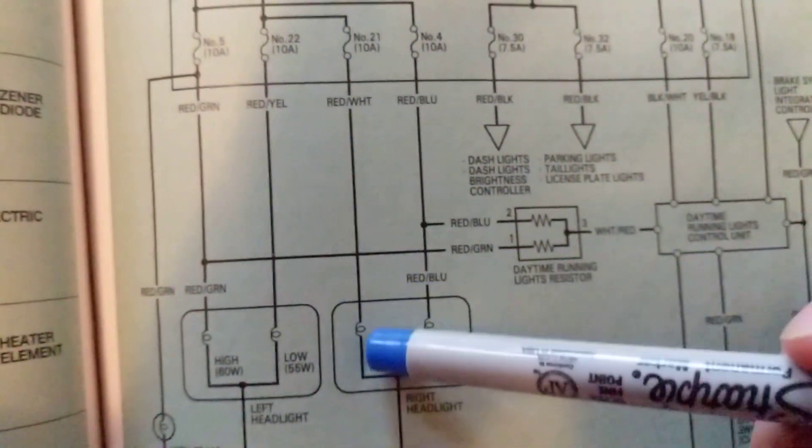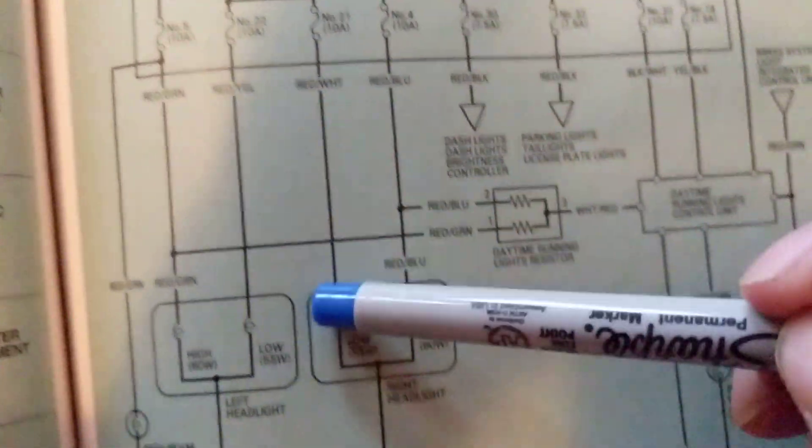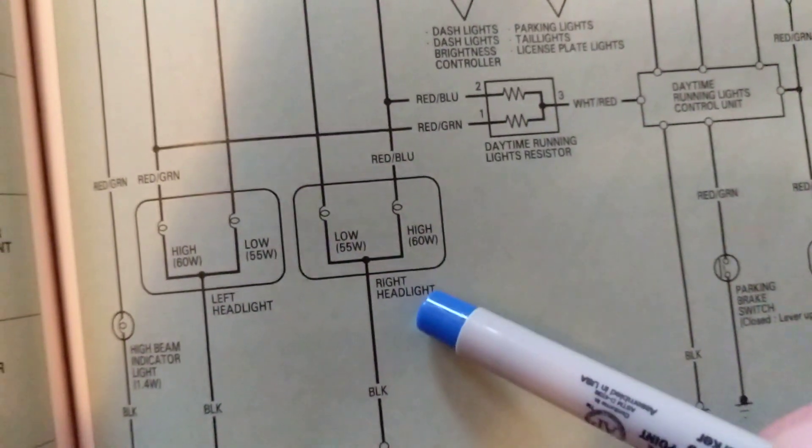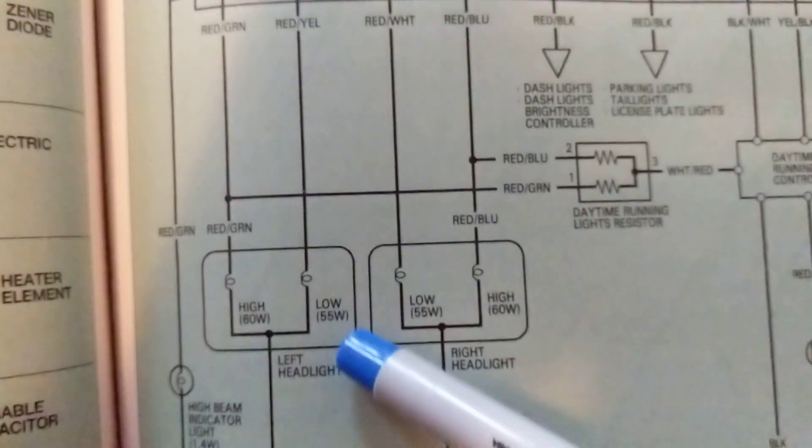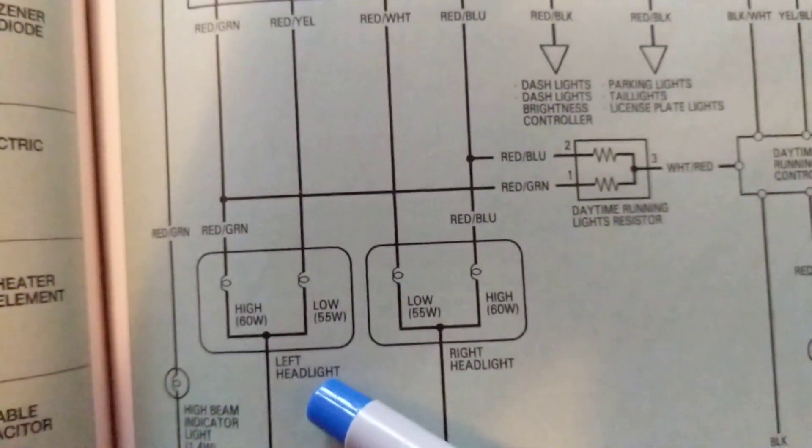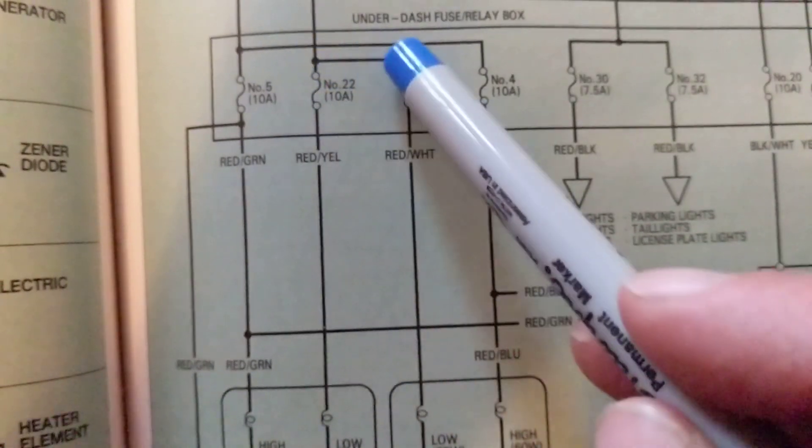Okay, so right here low, low are connected together. One headlamp here for the right, one headlamp here for the left. So these two are common right here.